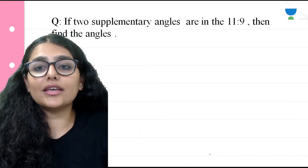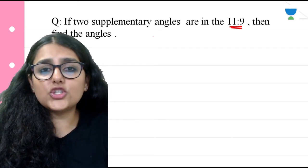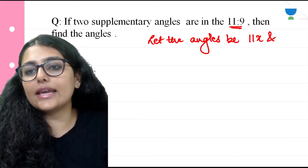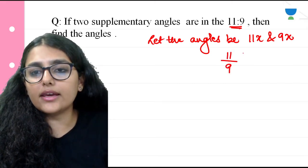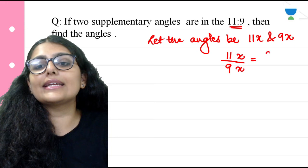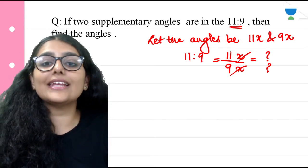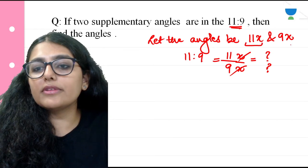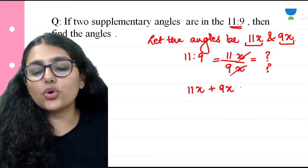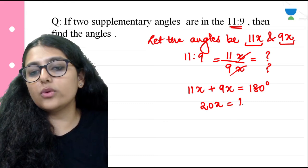If two supplementary angles are in the ratio 11:9, then find the angles. Since their ratio is given, let the angles be 11x and 9x. Both are supplementary, so 11x plus 9x equals 180 degrees. Therefore 20x equals 180.